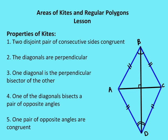Let's step back and talk about the properties of kites, as you'll recall from Chapter 5 on the properties of quadrilaterals. Properties of kites: I have two disjoint pairs of consecutive sides that are congruent. So I have AB congruent to AC, and AD congruent to CD.